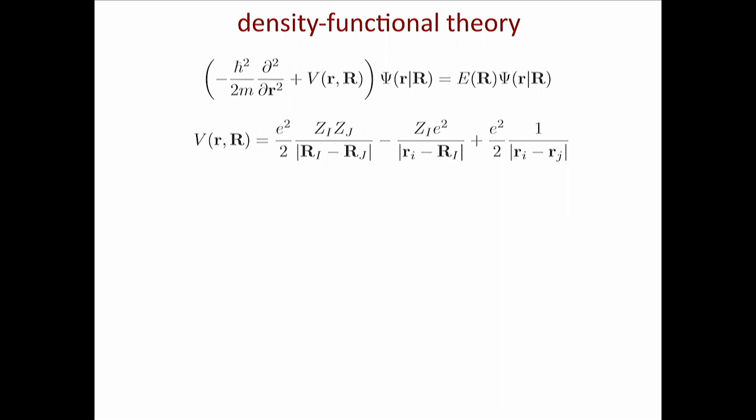So in principle, you have to solve this time-independent Schrödinger equation for the electrons alone, which is much simpler than the full equation because you have disposed of the nuclear degrees of freedom. But it is still very complex, because the electron-electron interaction means the eigenfunctions cannot be written as a product — even an anti-symmetrized product — of one-particle states. So you cannot solve this equation by solving each electron at a time.